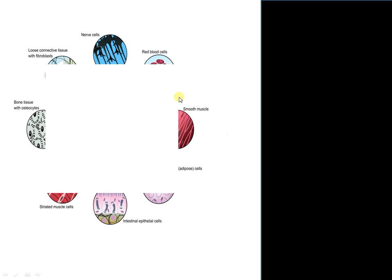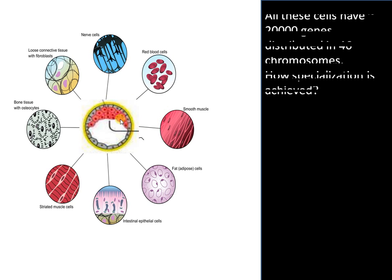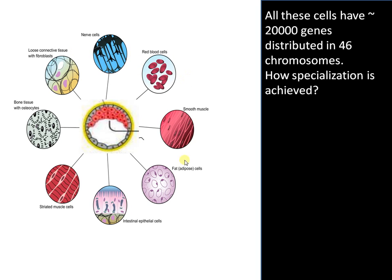Let's take an example to understand this concept. From the inner cell mass of the embryo, all these cells arise by differentiation. These cells differ in structure and function, and all these cells contain approximately 20,000 genes distributed in 46 chromosomes inside the nucleus.